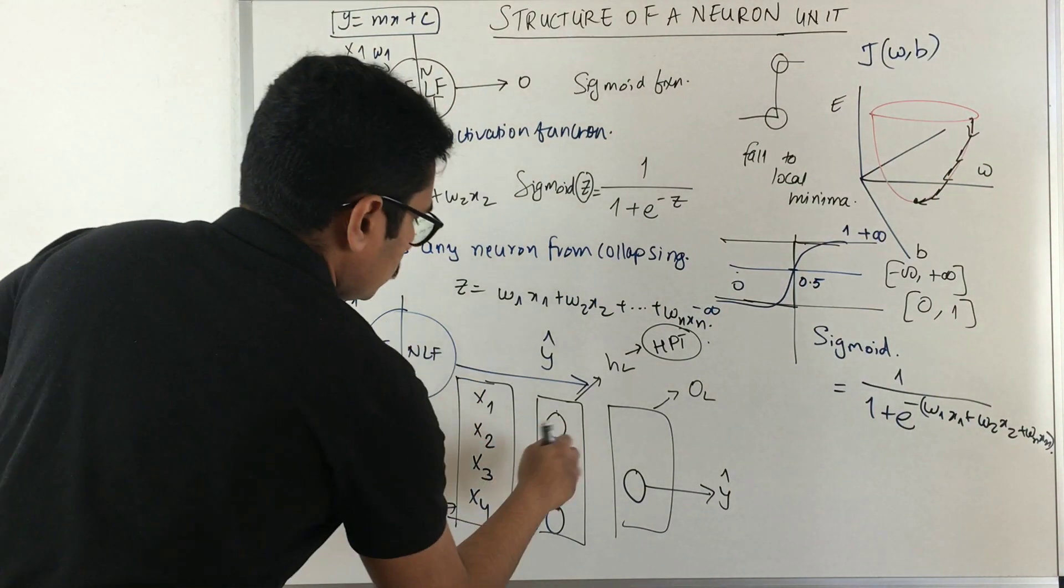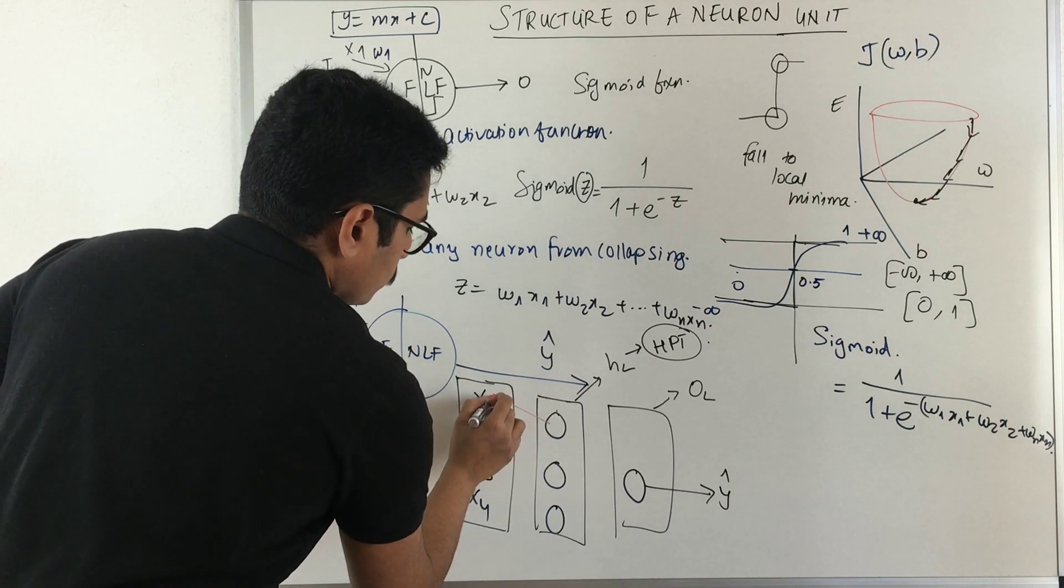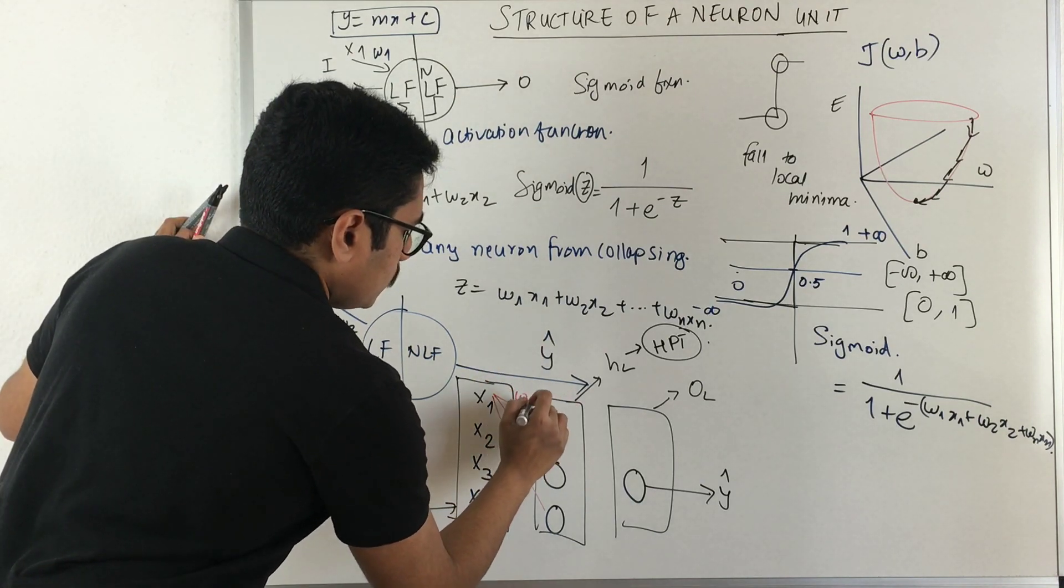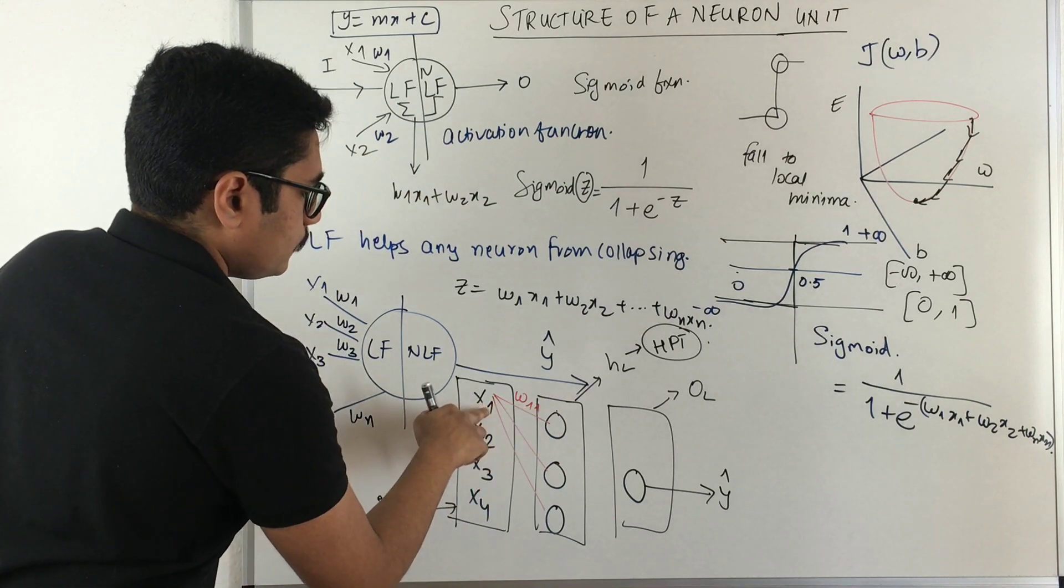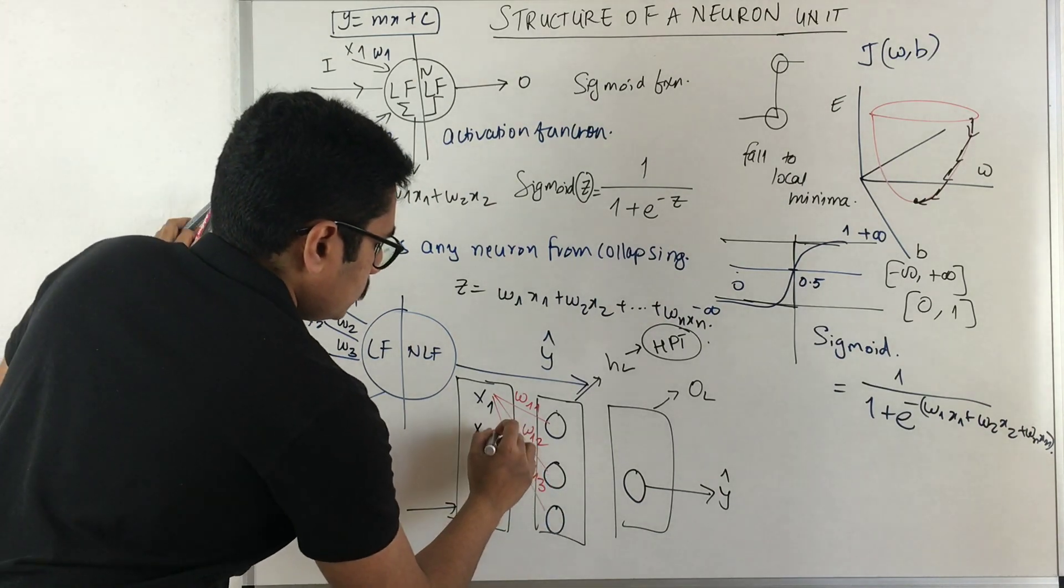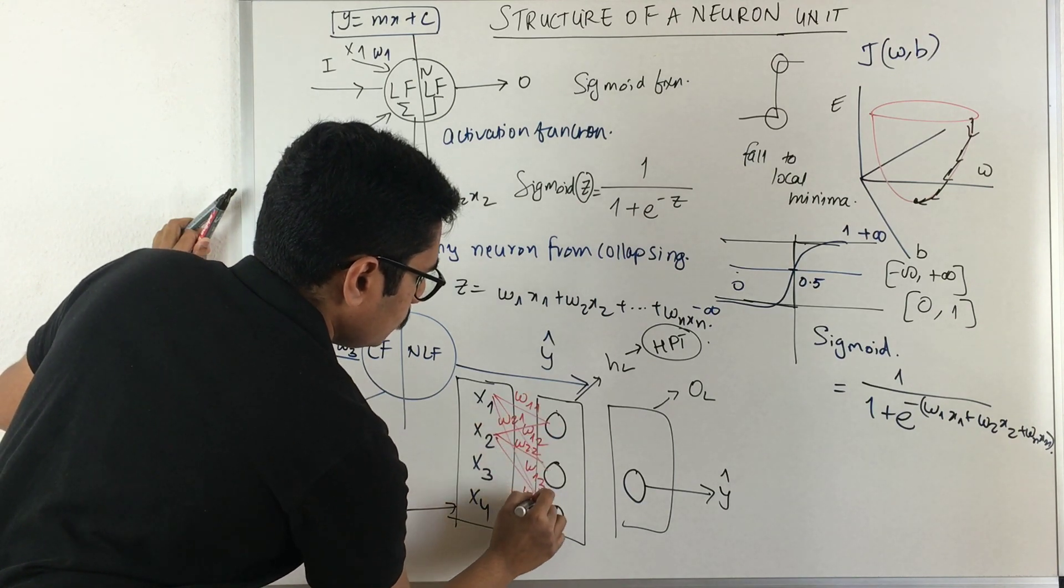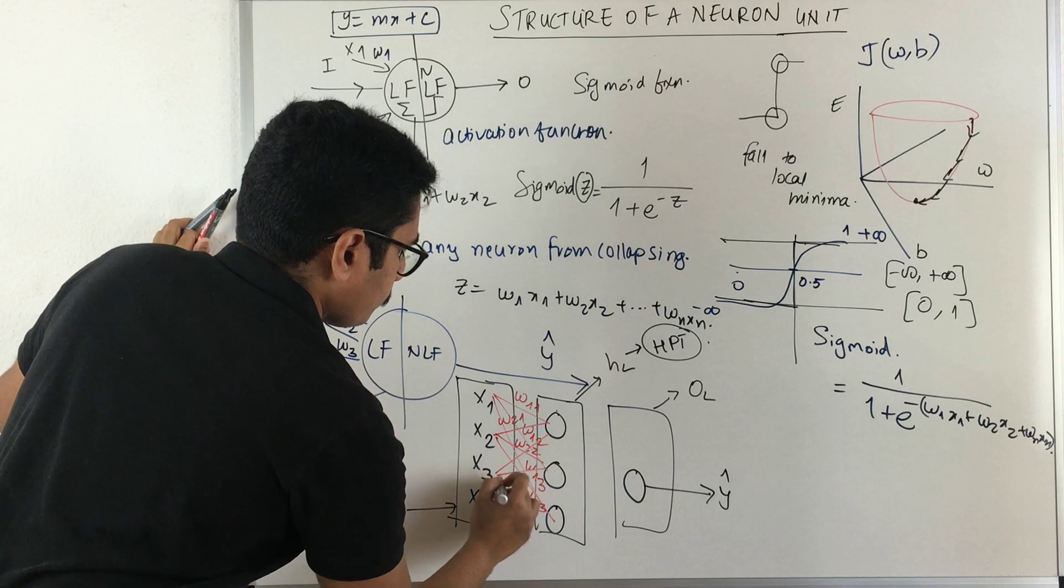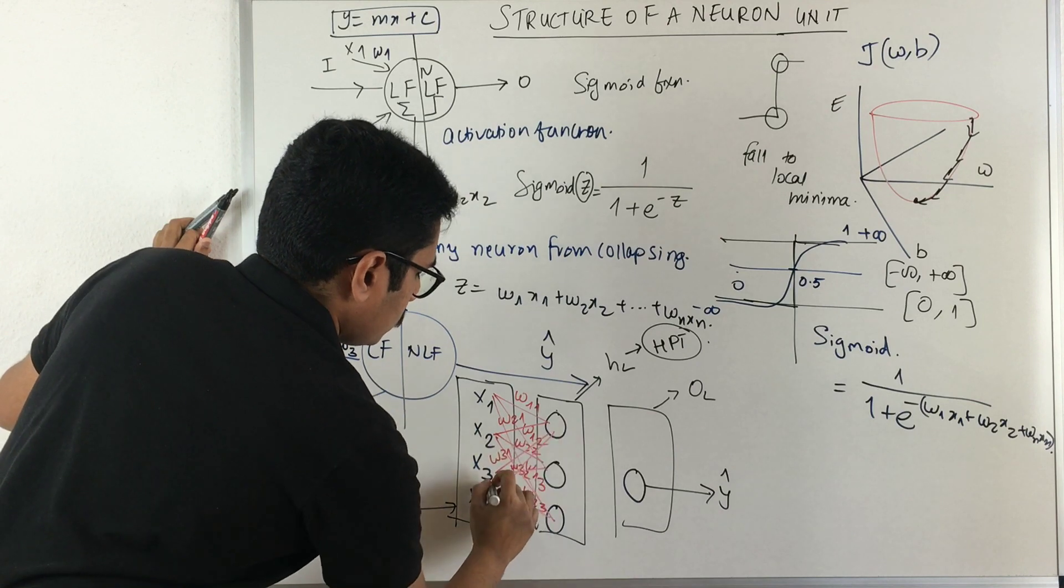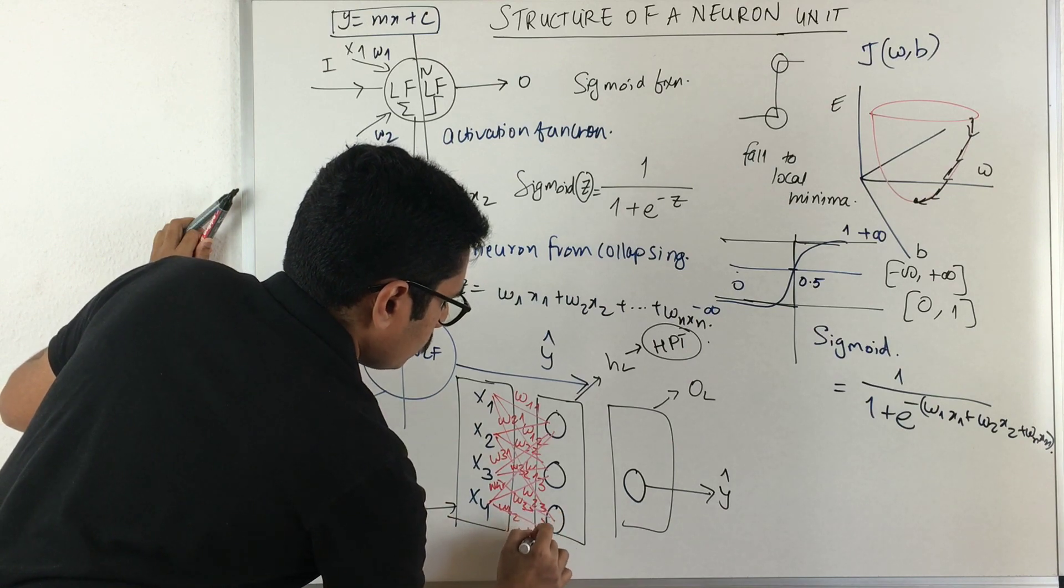What basically happens is that this particular neuron, these are individual units. To these individual units, you get input from this to this to this. With this, what you basically have is you have weights. This is coming from the first input. Similarly, you have w12, w13. Similarly, with the second input you have like this. So that is w21, w22, w23. Similarly, you have w31, w32, w33, w41, w42 and w43.